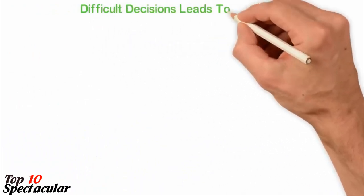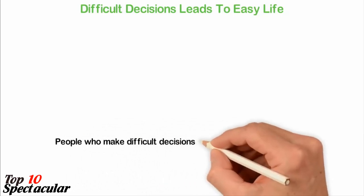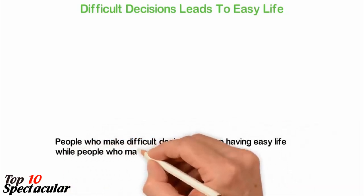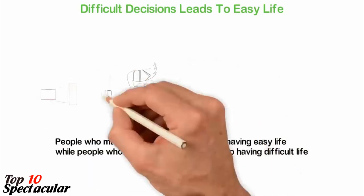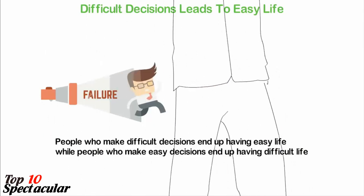Difficult decisions lead to easy life. People who make difficult decisions end up having easy lives when people who make easy decisions end up having difficult lives. It's that simple. You can't escape pains in life. If you run away from the pains of discipline, you'll get into the pains of regret.